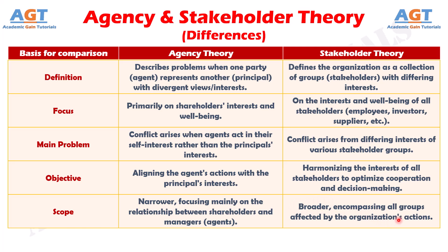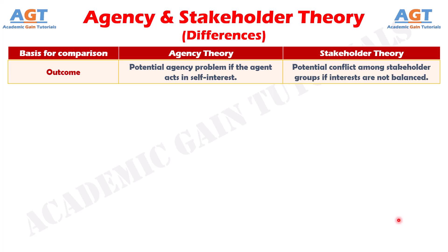Number six: agency theory sees issues when agents don't align with principals' goals, while stakeholder theory sees issues when stakeholders' interests conflict and aren't balanced.